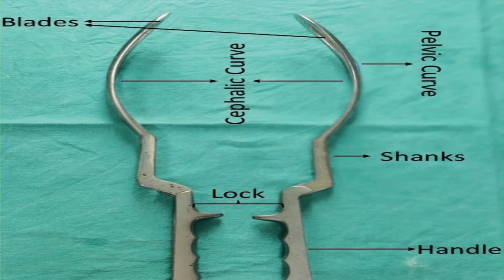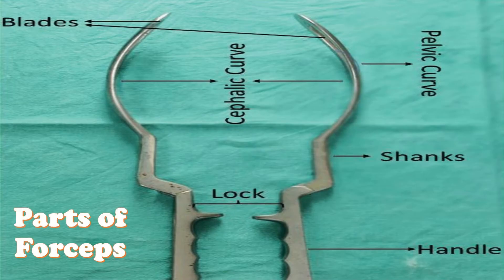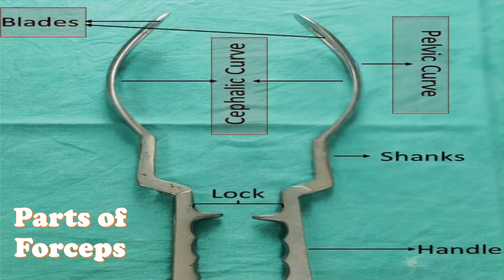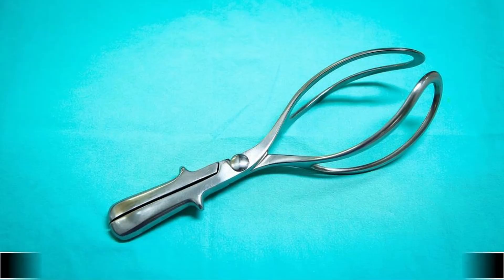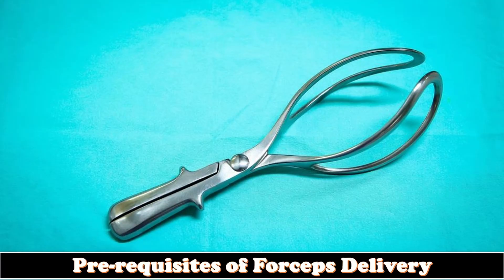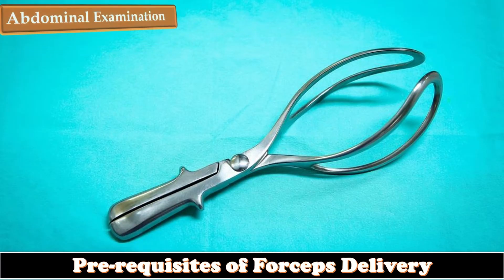The different parts of forceps include a pair of fenestrated blades with two curves — cephalic and pelvic. Articulation of the blades is provided by the lock in the middle, and the handles are connected to the blades via shanks, which are of variable sizes.